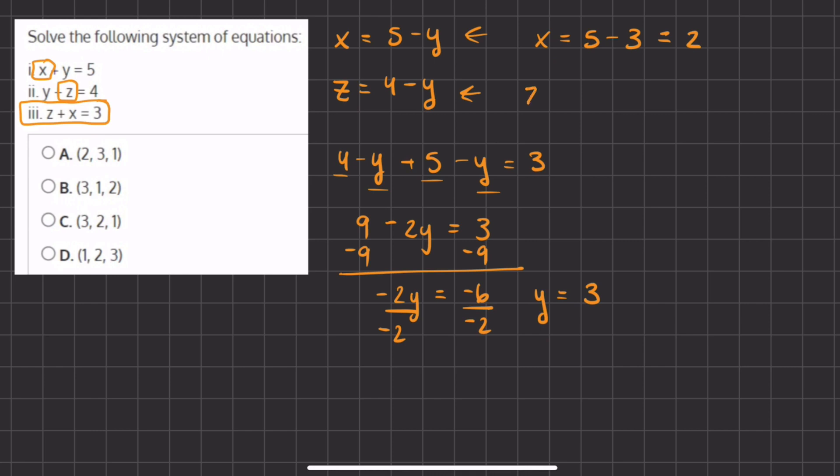And now to find the value of z, we have z equals 4 minus y, which is 3, and so 4 minus 3 gives us 1.